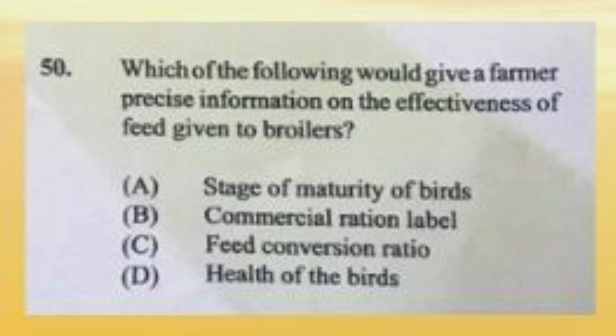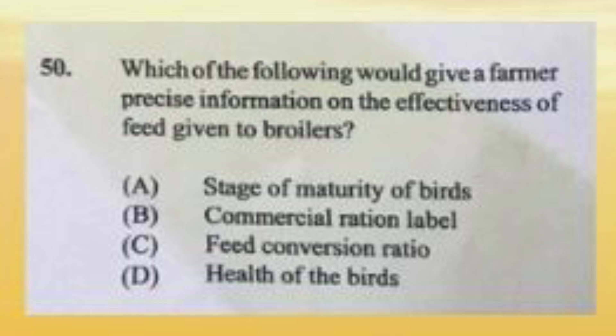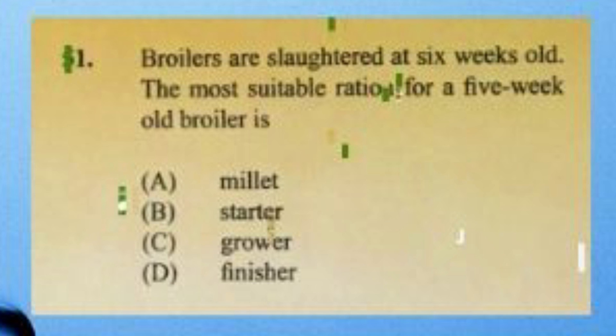Feed conversion ratio is the amount of feed used to produce one kilogram of body weight of animals. Question number fifty-one: broilers are slaughtered at six weeks old. The most suitable ration for a five-week-old broiler is A) millet, B) starter, C) grower, D) finisher. The answer is D, finisher, which has more fat content than protein. At the finishing stage approaching slaughter, the finisher ration is most suitable.